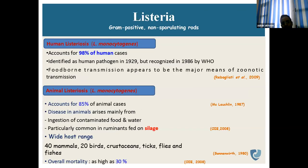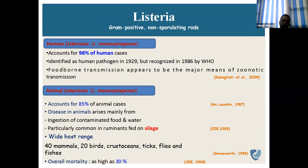Another bacterium of high zoonotic potential affecting sheep and goats is Listeria — a gram-positive, non-sporulating rod. The species Listeria monocytogenes accounts for 98% of human listeriosis cases. It was identified as a human pathogen in 1929 and re-recognized by WHO in 1986. Food-borne transmission appears to be the major means of zoonotic transmission. In 85% of animal cases it is implicated. Disease in animals arises mainly from ingestion of contaminated food and water, particularly ruminants fed on silage — sometimes called silage disease.